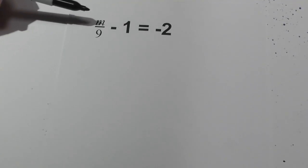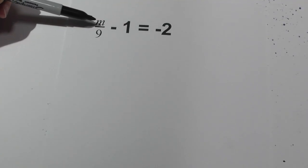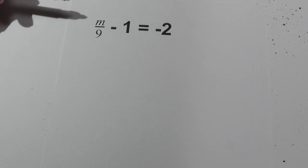Welcome to Moo Moo Math and Science. In this video, let's solve this equation: m over 9 minus 1 equals negative 2.